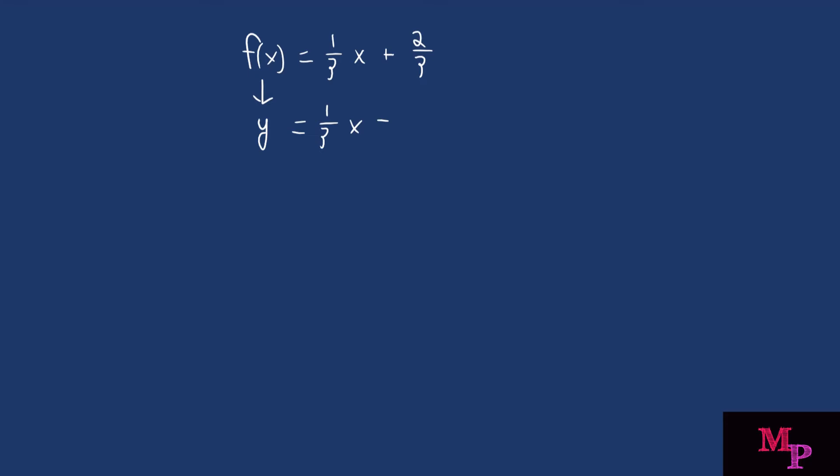And after you do that, you then want to change your dependent variable to your independent variable and vice versa. And that just means changing your y into your x and changing x into y. And keep everything else the same.